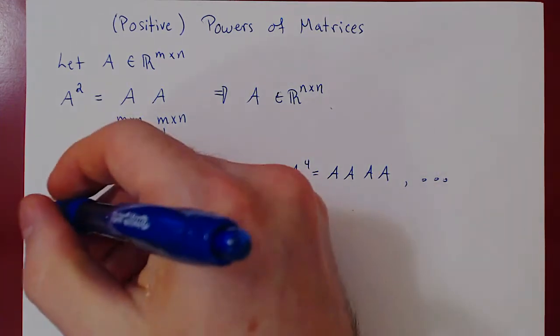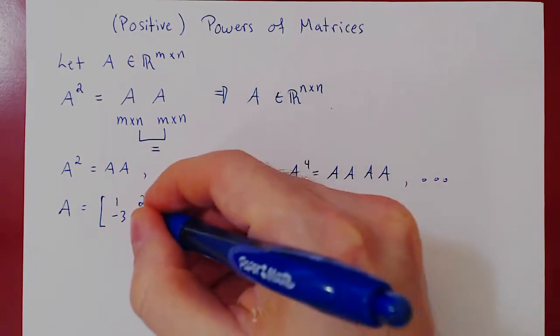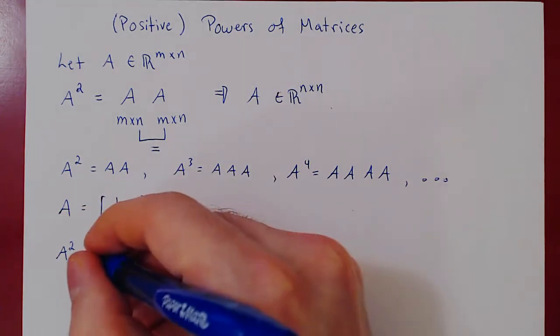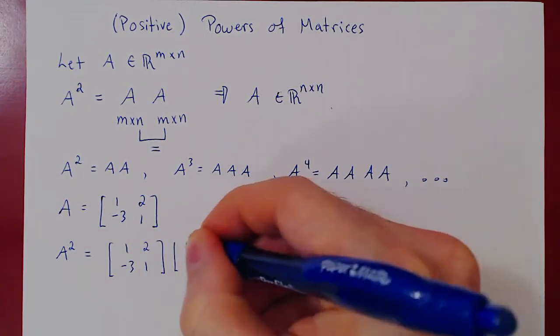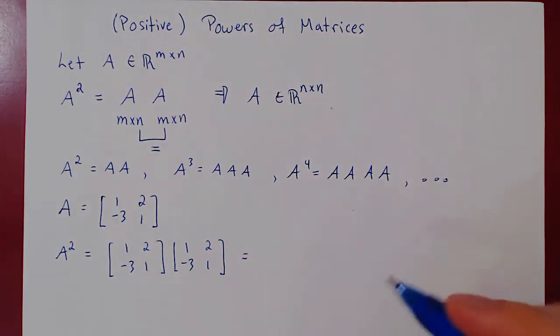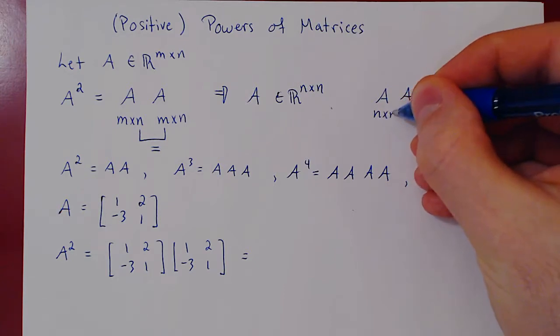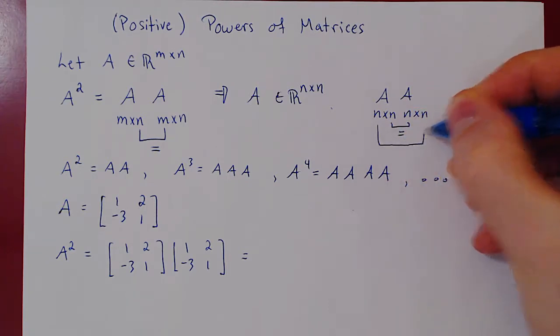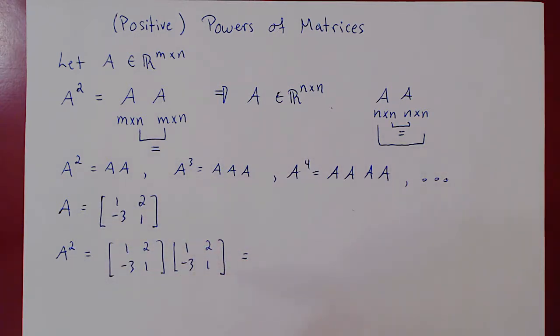We'll take a 2 by 2 matrix. So what if we take a to be the matrix 1, 2, negative 3, 1. Well, let's compute a squared, which is simply a times a. So 1, 2, negative 3, 1 times 1, 2, negative 3, 1. And notice that if a is an n by n matrix, and you multiply a with itself, a being a square matrix, the result will also be a square matrix of the same size, n by n. So here a is 2 by 2, so any positive integer power of a will always be a 2 by 2 matrix.